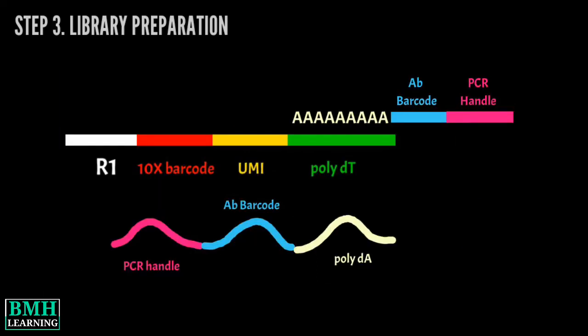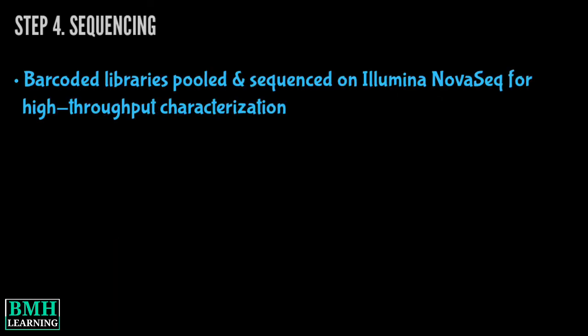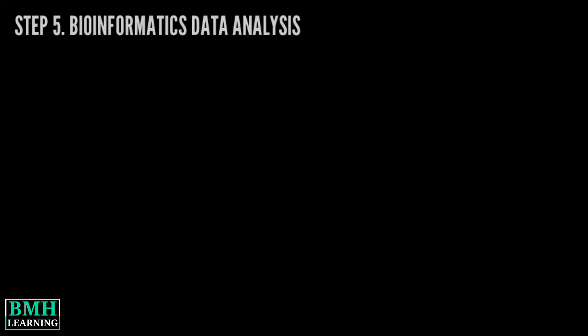Step 3: Library Preparation — unique barcodes for each individual cell are added to DNA prior to library preparation. Step 4: Sequencing — barcoded libraries are pooled and sequenced on the Illumina NovaSeq for high-throughput characterization. Step 5: Bioinformatics Data Analysis — visualize results through interactive software and receive custom analysis.